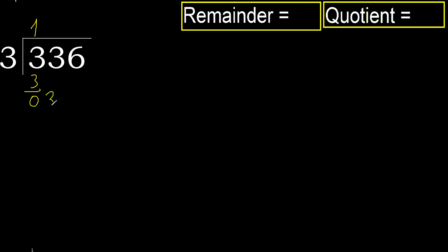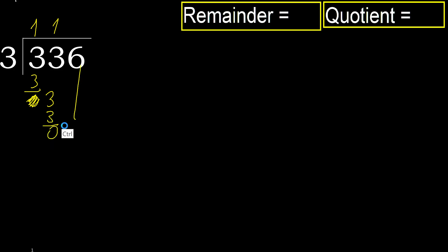Next, eliminate 0 on this side. Bring down 3. 3 multiplied by 1 is 3. Subtract.